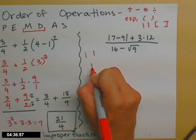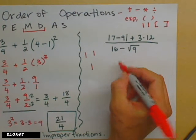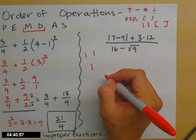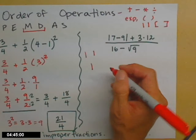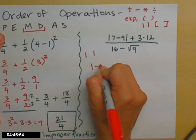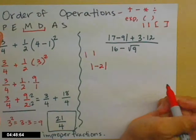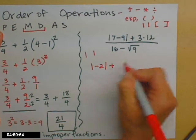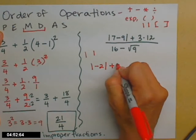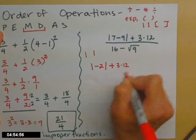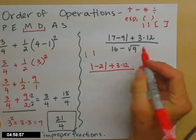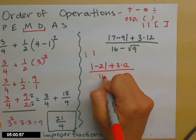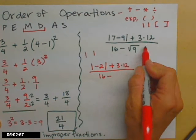So I'm going to do 7 - 9 first. So 7 - 9, getting a little bit ahead of ourselves in the book, 7 - 9 is -2. If you have $7 but you owe $9, you're $2 in the hole. So now I have the absolute value of -2 + 3×12. Yes, you can do the 3×12 at this point, but I will keep it apart for now. And then in the bottom I have 16 minus, now I have the square root of 9.